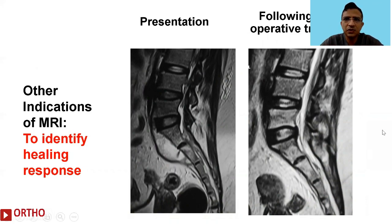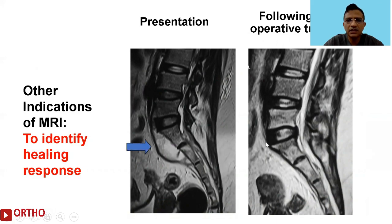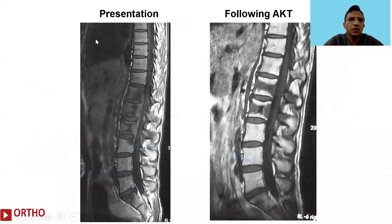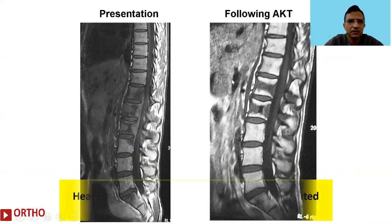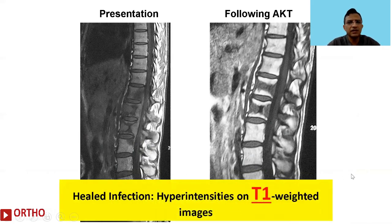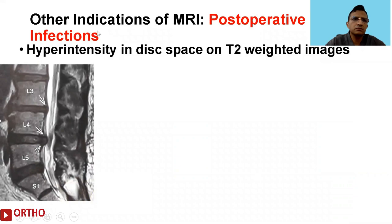Another indication of MRI is to identify the healing response. Here is an MRI before treatment was started — one can see the cold abscess — and where there is resolution of the cold abscess following non-operative treatment. One important indicator of healed infection is the presence of hyperintensities on T1-weighted images, which indicate that infected marrow has been replaced by fatty marrow — a sign of healing.